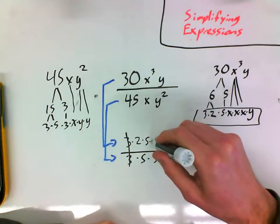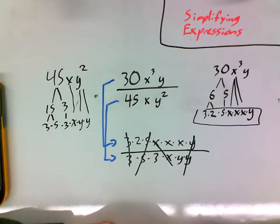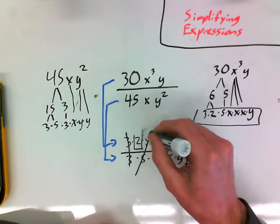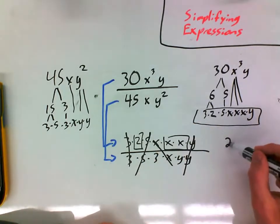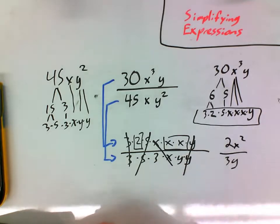So I took what I had here, I took the top, made it a new top, and I took the bottom and made it my new bottom. And now I'm going to see what cancels. The 3s cancel, the x's cancel, the y's cancel, the 5s cancel. Anything else? Nope. So what I've left on the top is a 2 and a pair of x's, so 2x squared. On the bottom, 3y.